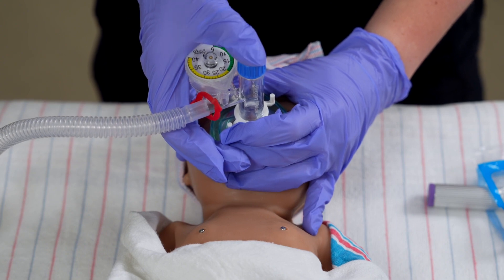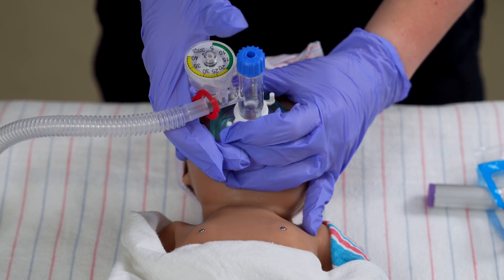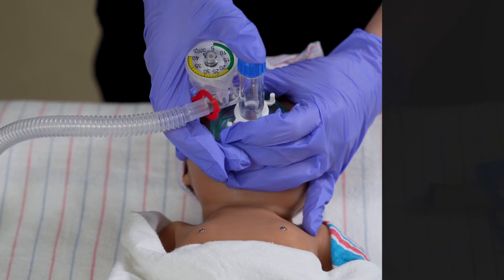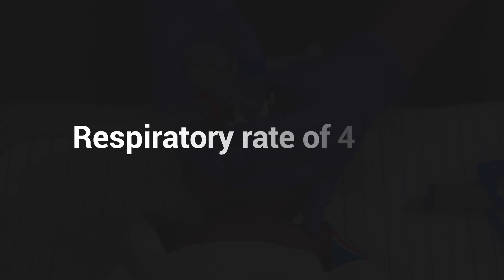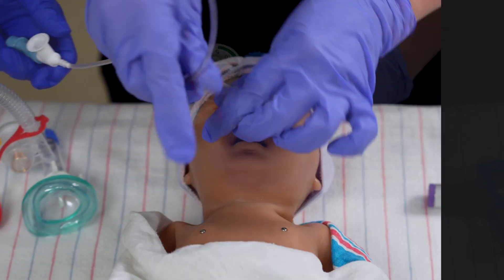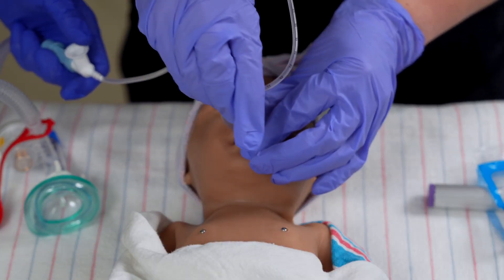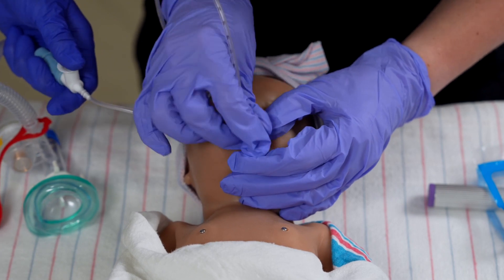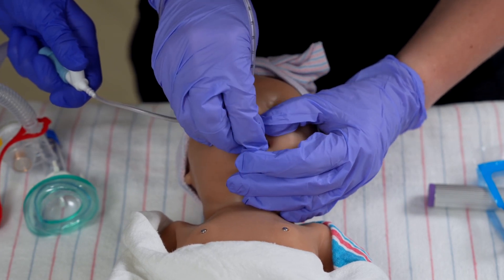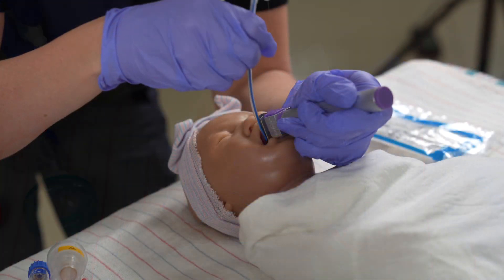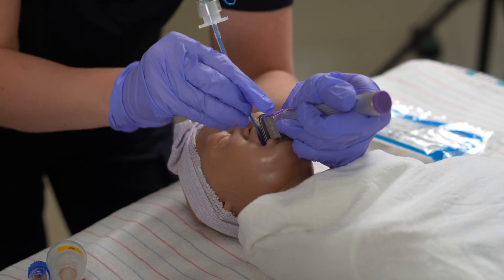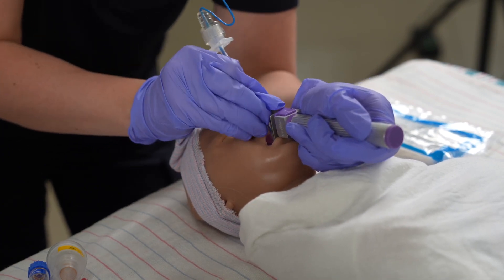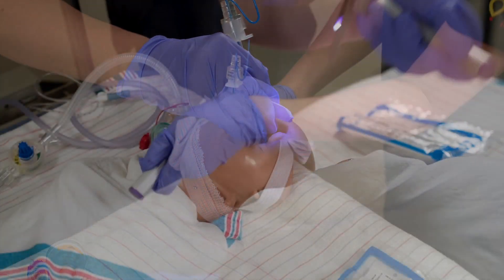Assist with bag and mask ventilation between intubation attempts. Maintain a respiratory rate of 40 to 60. The provider may also request for the infant to be suctioned for secretions between attempts. Communicate vital signs during the procedure, noting the heart rate and oxygen saturation.